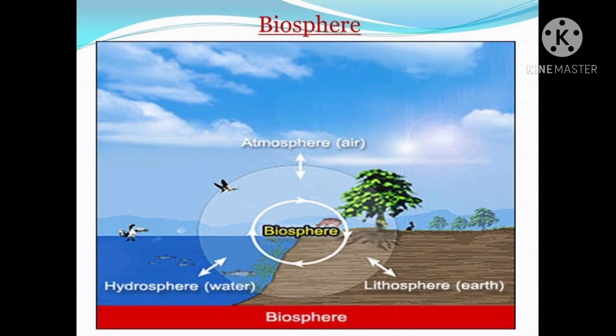Realms of the earth. A planet has four different regions or realms. The realm of land is called lithosphere. The realm of water is called hydrosphere. And the realm of air is called atmosphere. The zone where land, water and air meet is called biosphere.